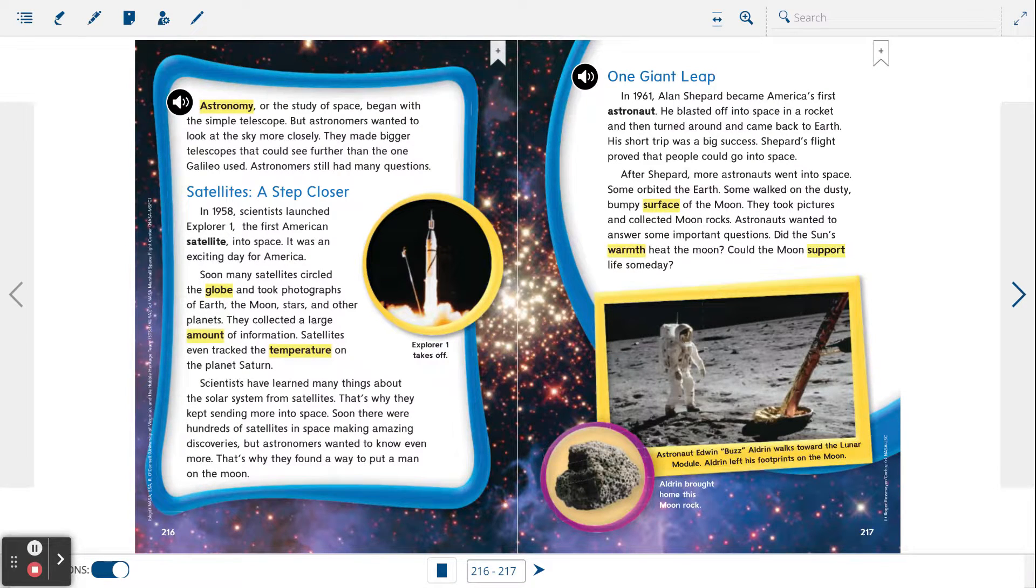Scientists have learned many things about the solar system from satellites. That's why they kept sending more into space. Soon, there were hundreds of satellites in space, making amazing discoveries. But astronomers wanted to know even more. That's why they found a way to put a man on the moon.